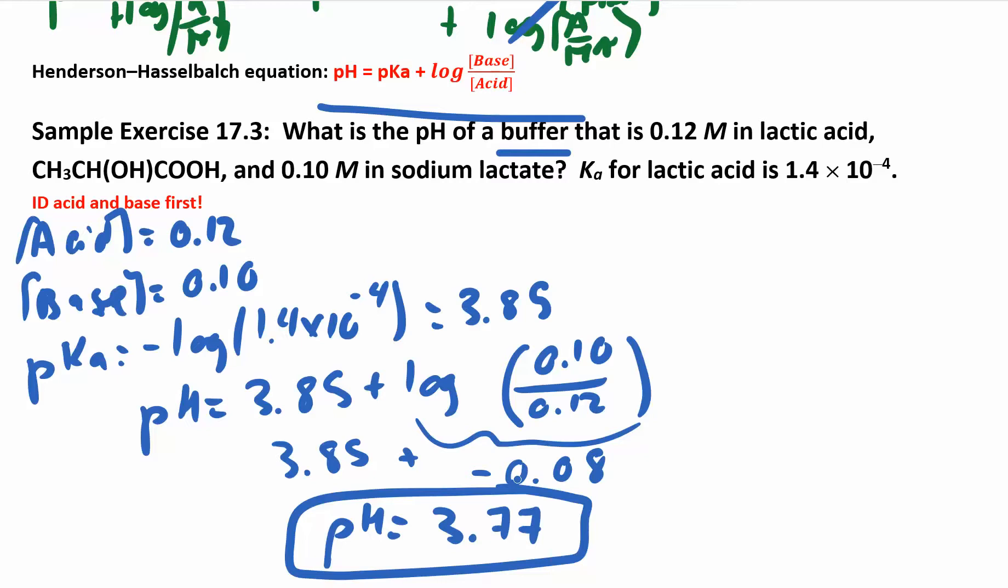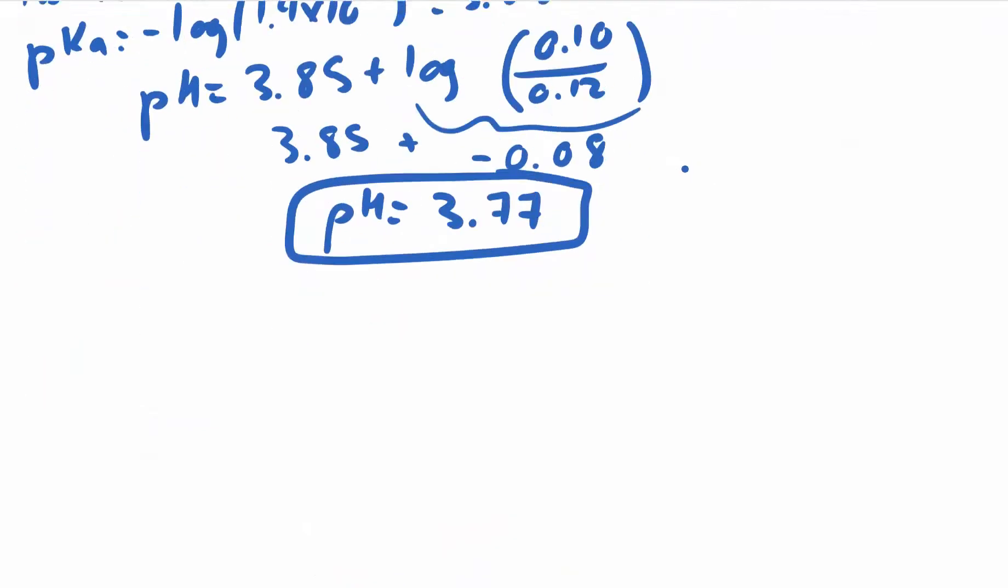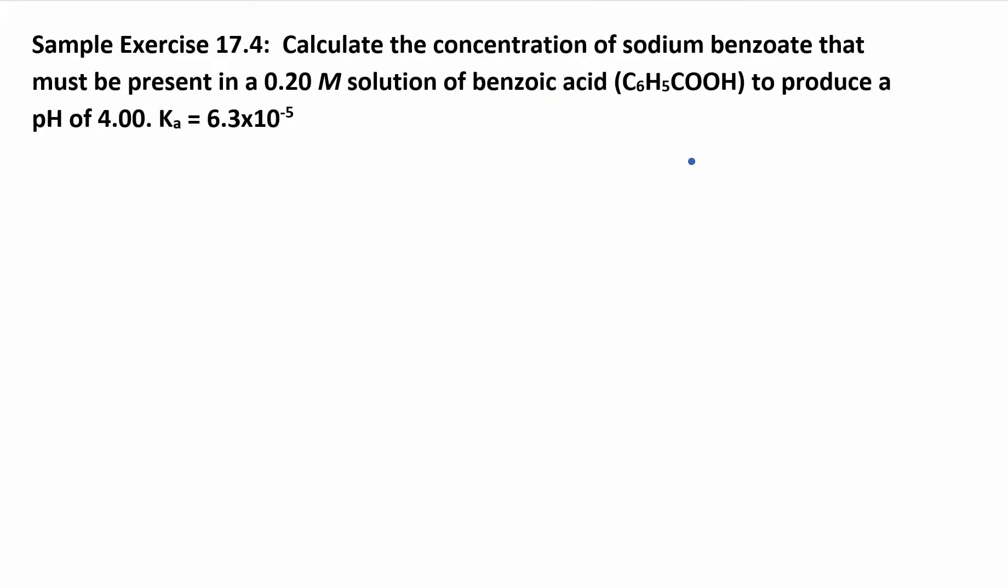So make sure you don't just multiply this whole thing through. People do that all the time. They don't realize that that's a plus sign there. They think it's a multiplication sign. pKa plus the log of the base over the acid. These problems are pretty straightforward. We could try another one.